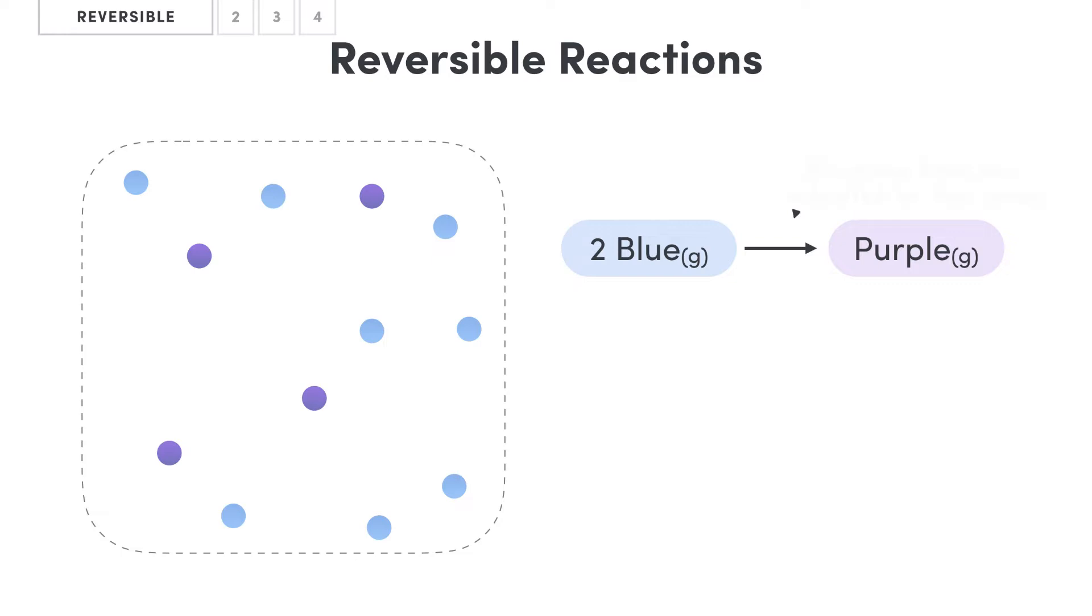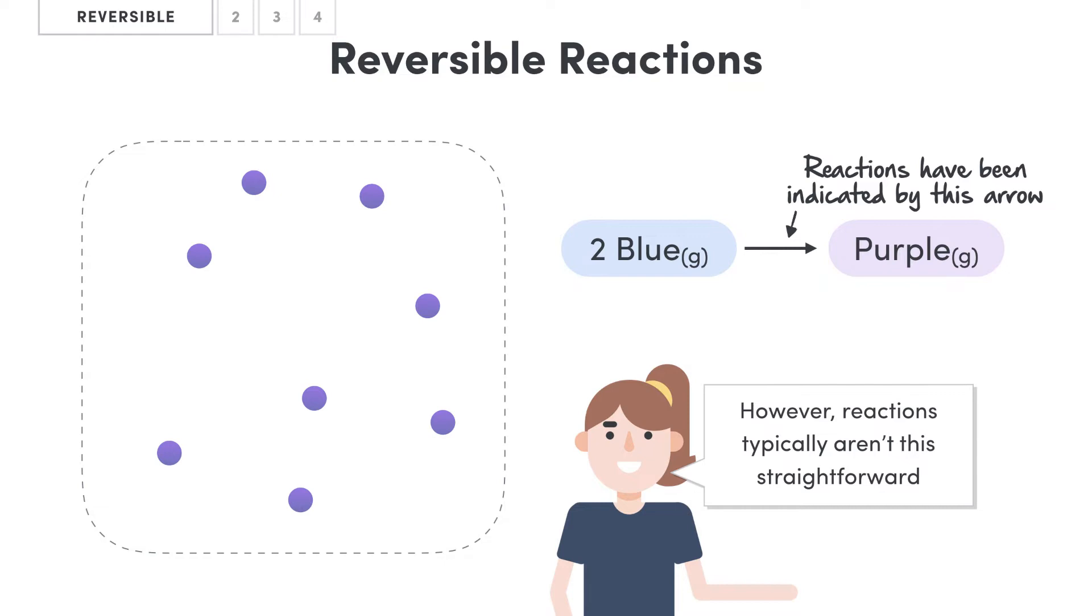And up to this point in chemistry, we have written equations for reactions like this with an arrow going from left to right to represent the fact that reactants are turning into products, which also suggests that in a given reaction all the reactants will turn into products. However, reactions aren't typically this straightforward.